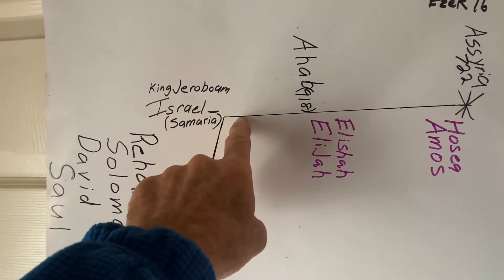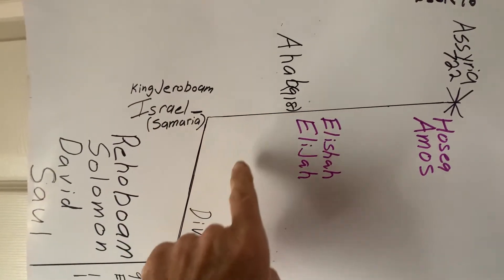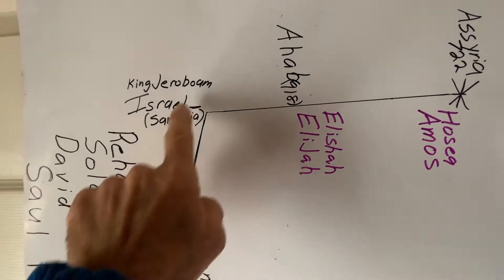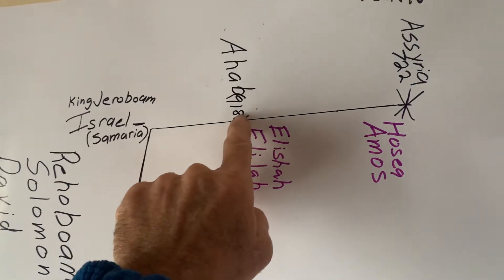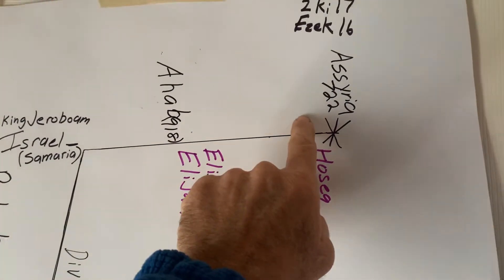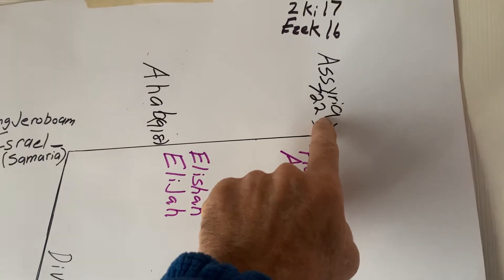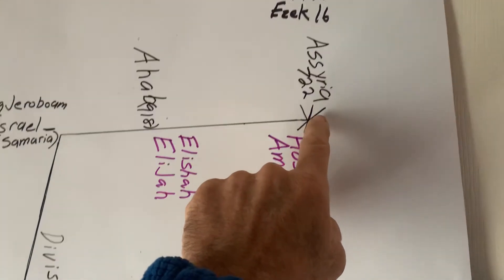The northern kingdom, under Jeroboam and Ahab, falls into idolatry. And the northern kingdom is no more in 722 before Christ when God brings Assyria in.